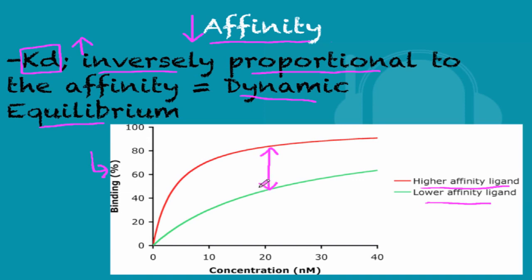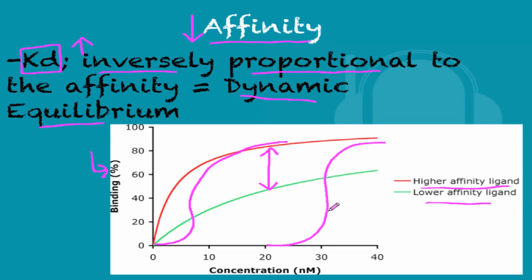On the semi-logarithmic scale, the higher-affinity ligand would appear shifted left and the lower-affinity ligand to the right. It shows the same information as the linear scale, but with a different curve — the semi-log has an S-shaped curve whereas the linear scale has a linear curve. So at a lower concentration you have higher binding for a higher-affinity ligand, and at a higher concentration you see the lower-affinity ligand binding.